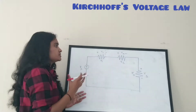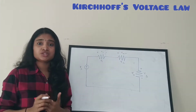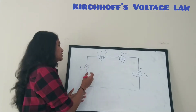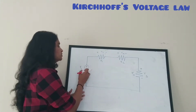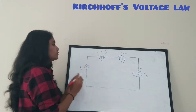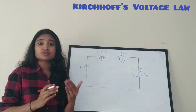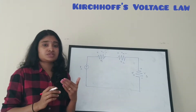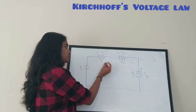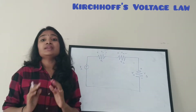Before considering the algebraic sum, you have to follow the sign conventions used in KVL. If you are going from the negative terminal to the positive terminal of a voltage source, you take the sign of that voltage as positive. And if you are going from positive to negative, you take the voltage as negative.